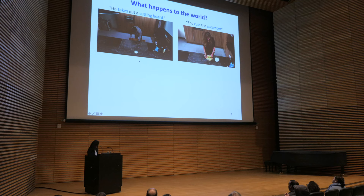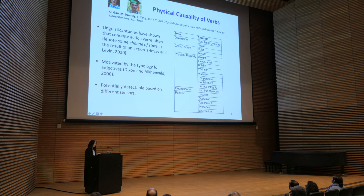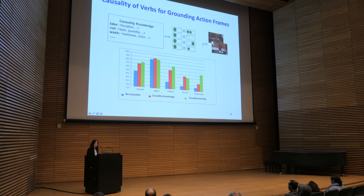Let's take a look at what happens in the physical world. When someone takes out a cutting board, the location of the cutting board changes. When she cuts the cucumber, it changes from one big piece to several smaller pieces. Linguistic studies have shown that concrete action verbs often denote change of state in the physical world. My students Childe and Malcolm collected data and identified 18 dimensions of state change that might be perceived from the environment. If we know about these verbs' state changes, this can provide higher-level processing guidance for visual processing. When we incorporate this causality knowledge into the graphic models, performance significantly improves.